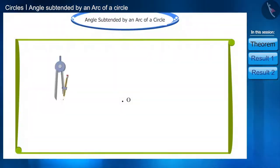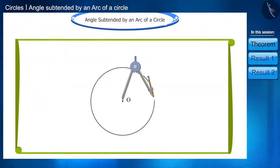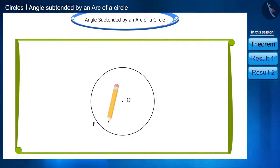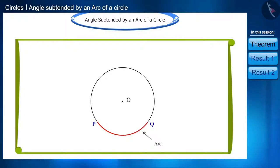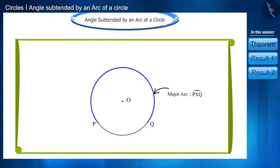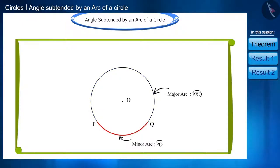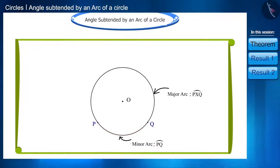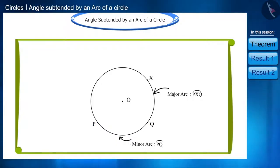Friends, draw a circle with center O. Take two points P and Q on it. The part which falls between these two points is called an arc. The longer area between the points is called the major arc and the smaller part is called the minor arc.